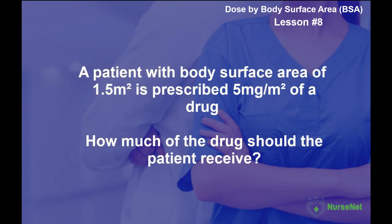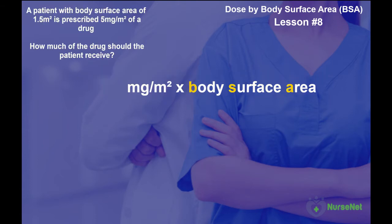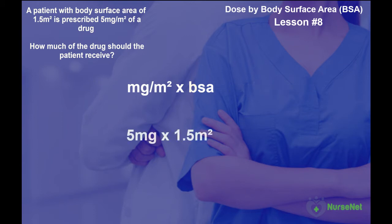So let's do an example. A patient with a body surface area of 1.5 meter squared is prescribed five milligrams per meter squared of a drug. How much of the drug should the patient receive? Using the formula — dose multiplied by the patient's body surface area — that's five milligrams per meter squared multiplied by 1.5 meter squared, which gives us 7.5 milligrams.